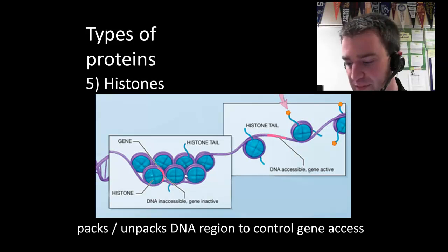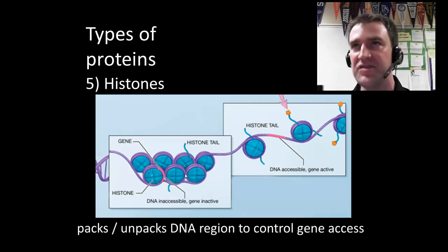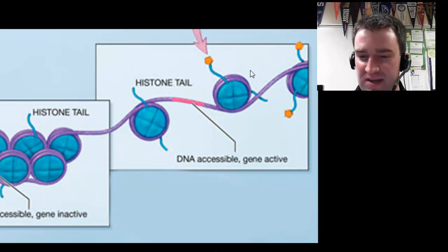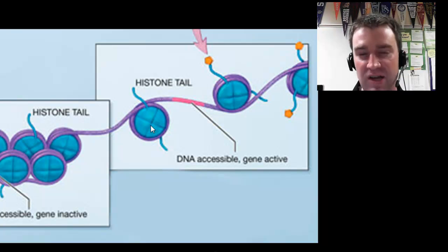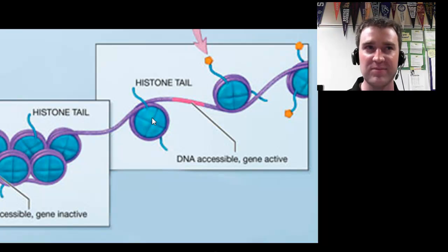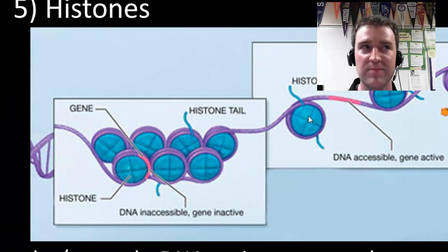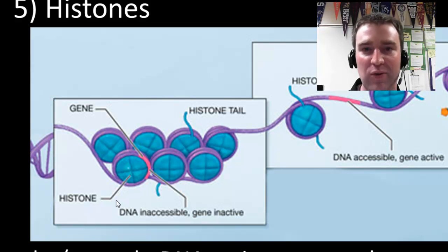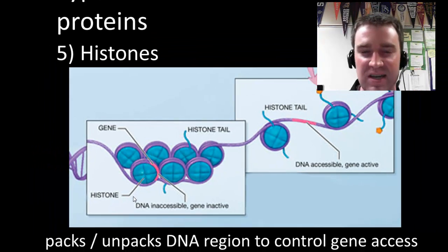Histones are another type of protein we'll see later, and they can also affect the rate of production of other proteins, but in a slightly different way. Histone proteins are shown in blue here, and they're wrapped around the DNA shown in purple. Histones can effectively unwrap themselves to make the DNA more accessible in a certain region, or they might wind up a particular region to make it more inaccessible for making proteins in that DNA region.